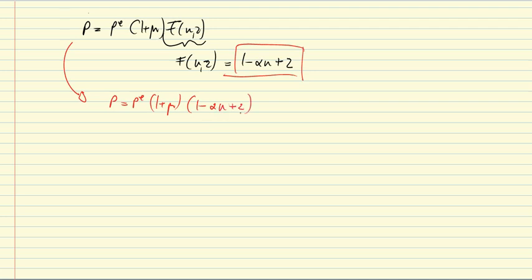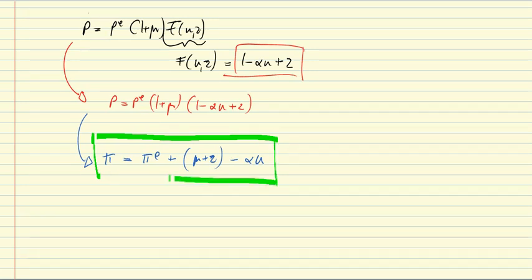This in turn we can rewrite in terms of growth rates, meaning in terms of rates of inflation. And I will not derive that here, but refer you to the appendix of the textbook and just state the conclusion. Let me write it down: pi equal to pi E plus mu plus Z minus alpha U. And this is what we're going to work with. This is the Phillips curve.